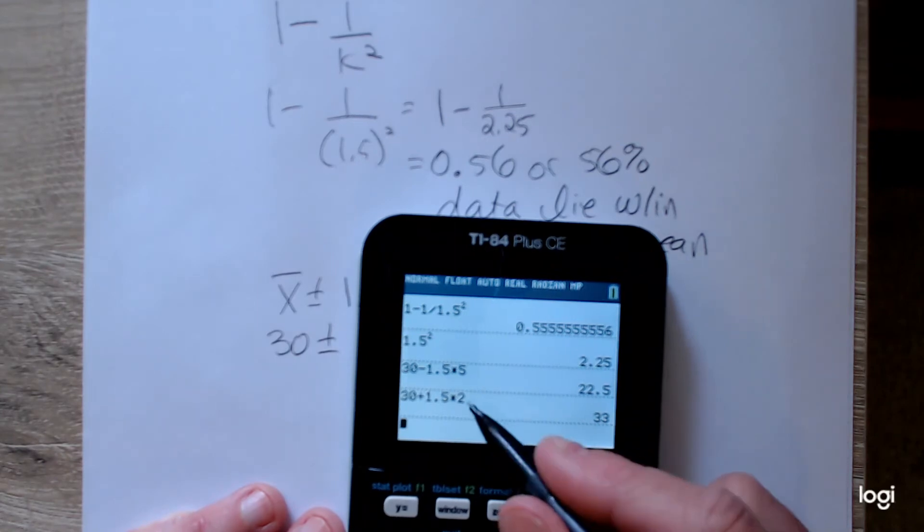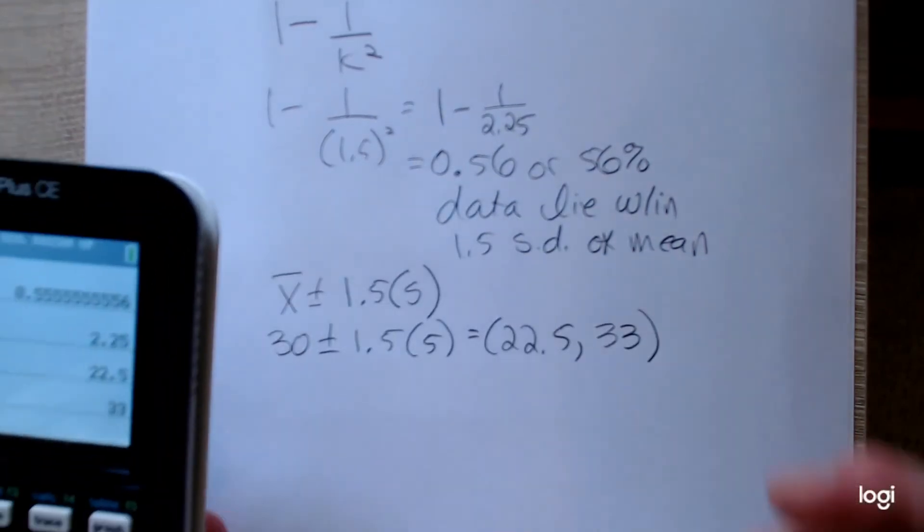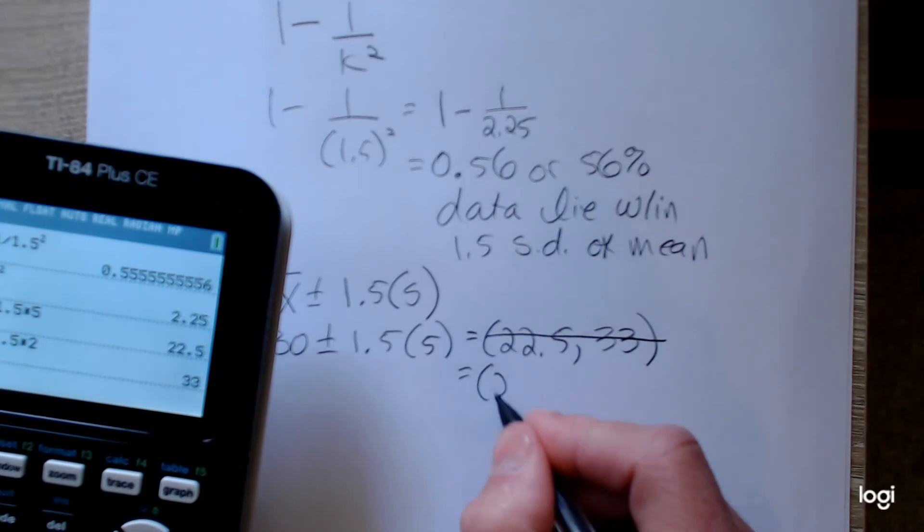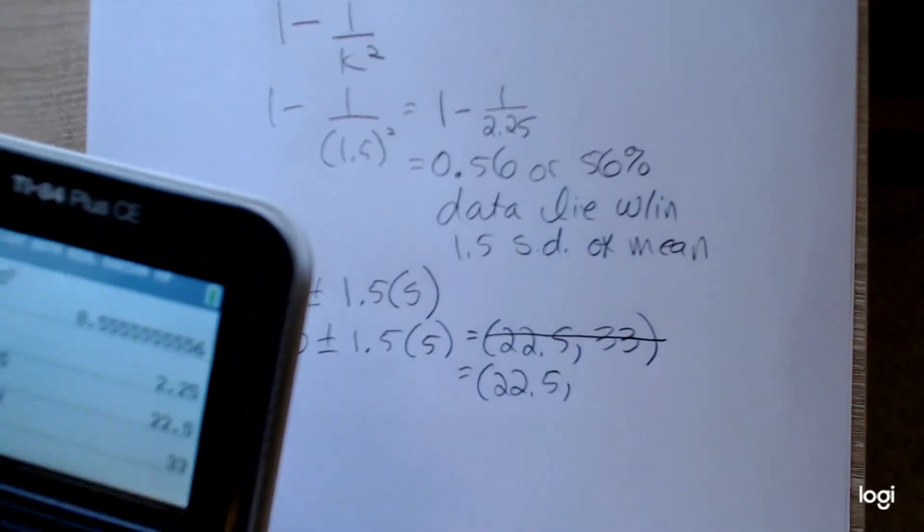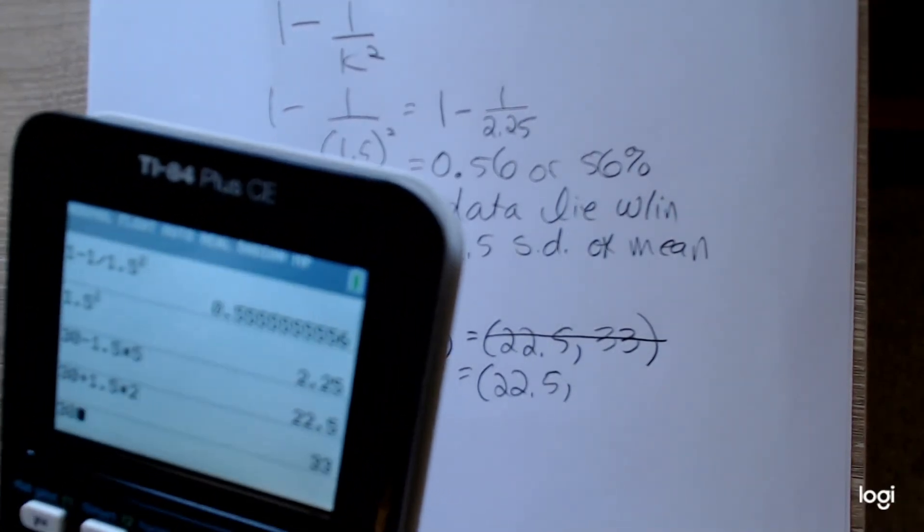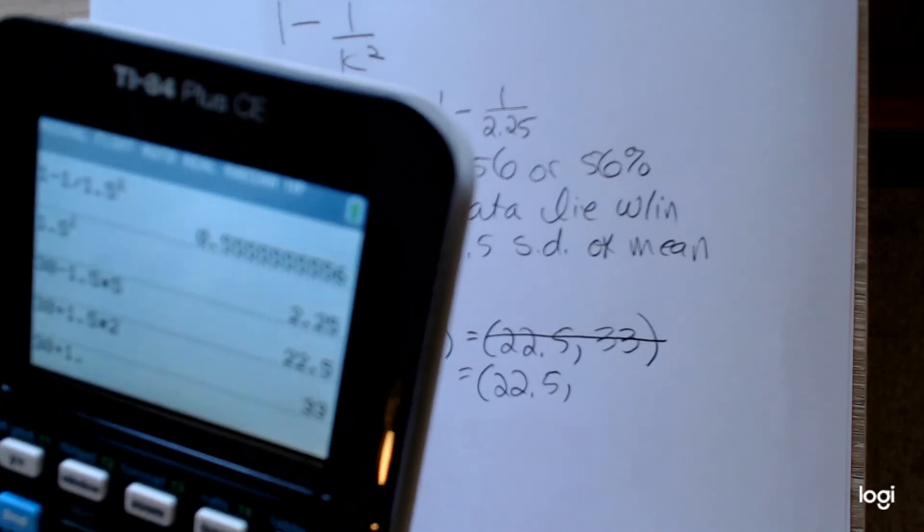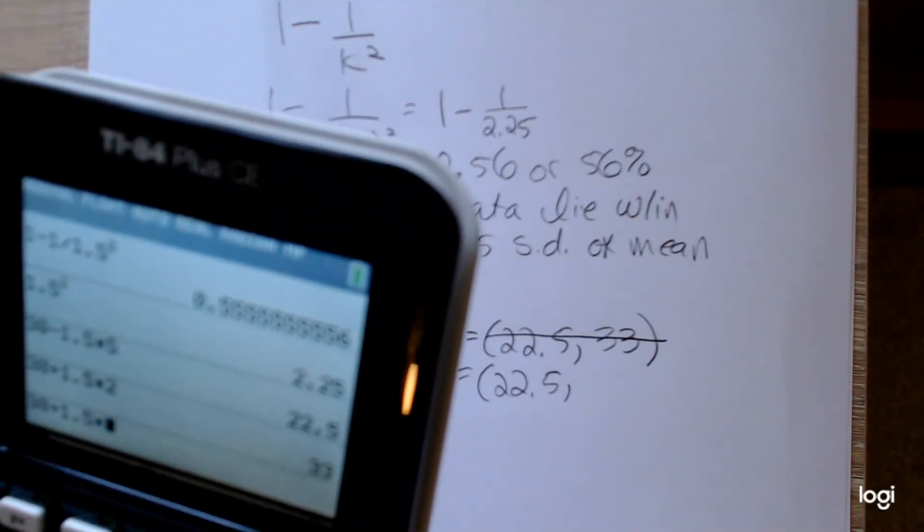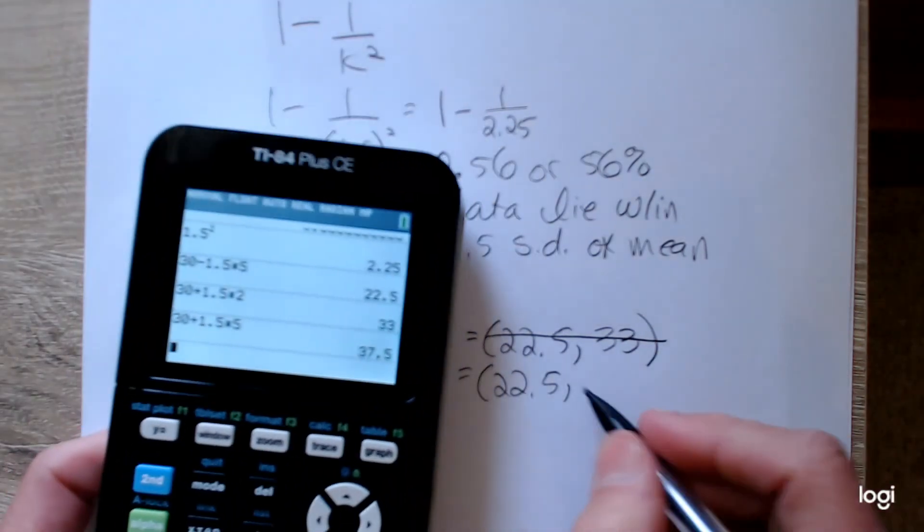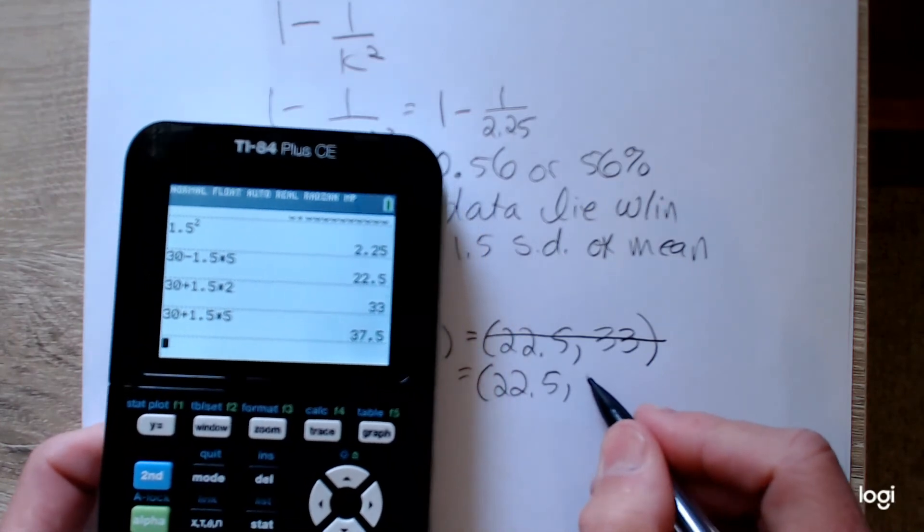Oops, here's a mistake. I apologize for that. Let me scratch that out. The lower interval endpoint is correct, but let me redo the upper one. It goes up to 37.5.